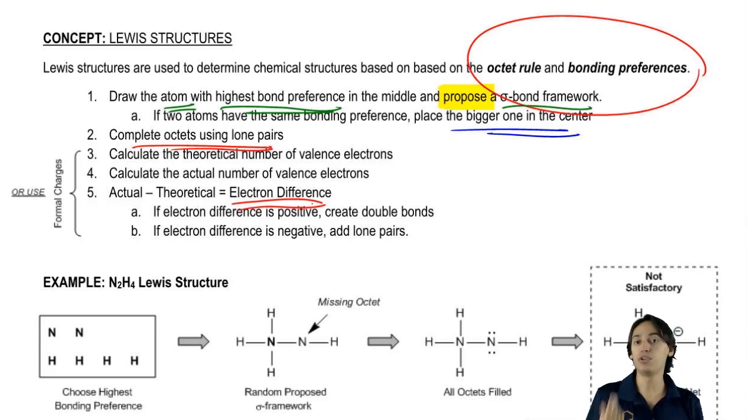And if you had too few dots, then you start adding more lone pairs in order to satisfy the actual theoretical valence.